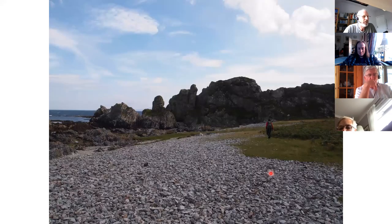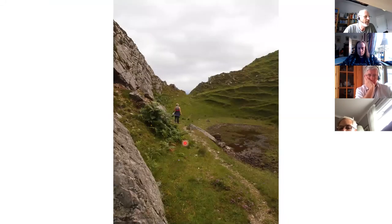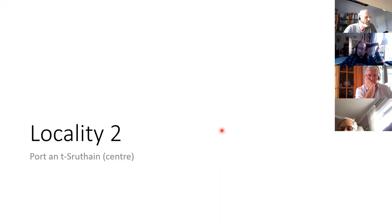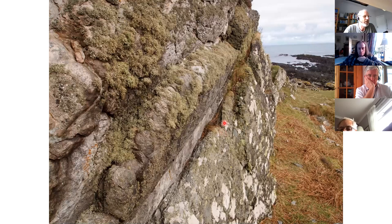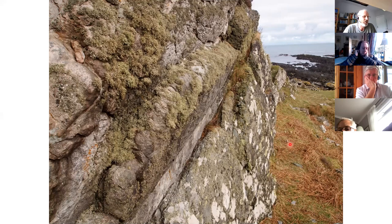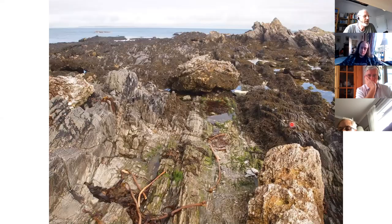Walking back towards Port an Stroithan there's a big quartzite ridge and a little pool, and we come to locality two — the central part of Port an Stroithan, which is the core of this part of the Islay anticline. The first thing we see coming through the notch is quartzite and a cleaved meta-mudstone, which is actually the base of the Jura quartzite — so we're seeing the top of the Bonnerhaven Dolomite Formation here. It's sometimes better called the Bonnerhaven Formation because it's not all dolomite; this is cleaved meta-mudstones and meta-siltstones at the top of member four.